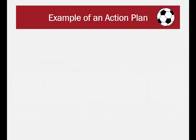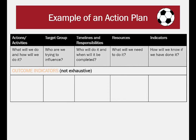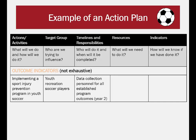Finally, we will look at the outcome indicators for the Youth Soccer Sport Injury Prevention Program. Actions/activities and target group will still be the same. Timelines and responsibilities: In year two, data collection personnel will be needed for all established program outcomes. Resources: Research assistance to collect ongoing data. Indicators: The indicator of a successful program will be a reduction in injury in the training group.